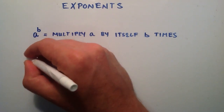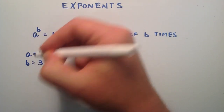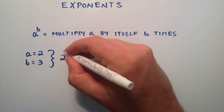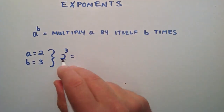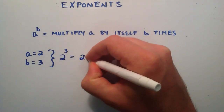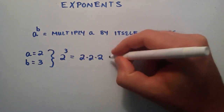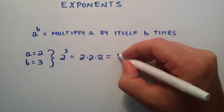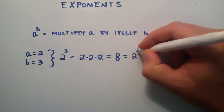So for example, if a is equal to 2, and b is equal to 3, then we have 2 raised to the 3, or the third power, and that means that we take the number 2 and we multiply it by itself 3 times. So that's 2 times 2 times 2 — three 2's. So 2 times 2 is 4, and then 4 times another 2 is 8.